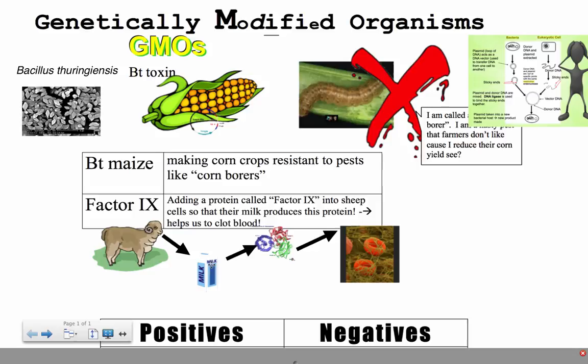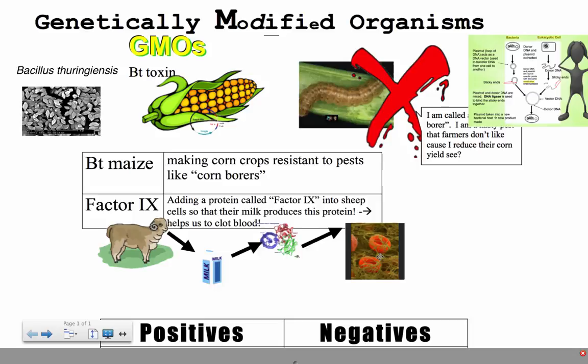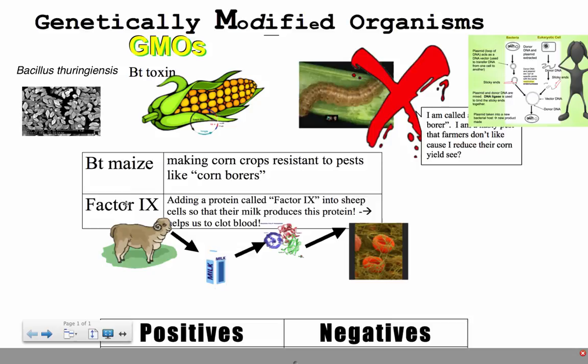The gene that produces this particular protein has been isolated, probably from a human cell, and inserted into the sheep. Through transcription and translation, that protein actually gets produced inside the sheep's milk. Then we take the milk, clean it up, purify it, and make sure it's safe for human use. Once purified, it gets stored by pharmaceutical companies and sold to people who need it to stay alive.